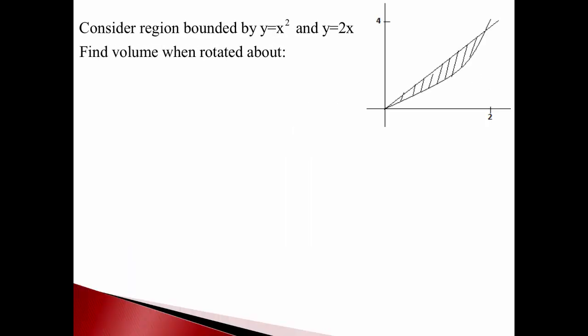We're going to take a region bounded by a couple of curves — in this case x squared and 2x — and rotate that around the x-axis to start with. And we're going to find the volume using washers, whatever that's going to mean.